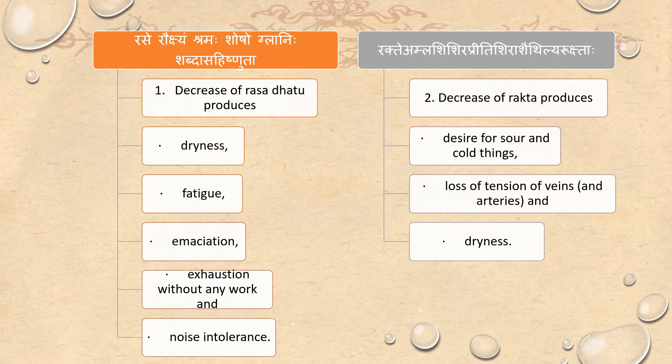Rakta Amla Shishira, Priti Shira, Shaitilya Rokshada. Decrease of Rakta (blood tissue) produces desire for sour and cold things, loss of tension of vessels and arteries, and dryness.